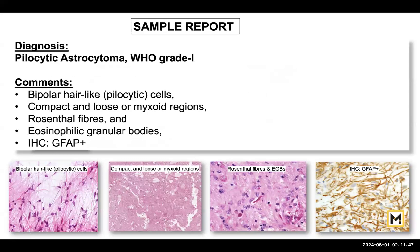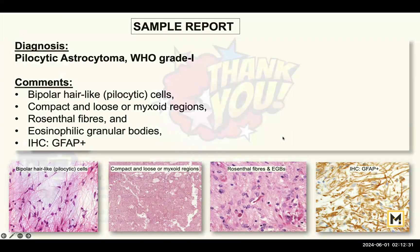This is a sample report showing how we report such cases. You can diagnose it as pilocytic astrocytoma WHO grade 1 with comments highlighting the diagnostic hallmarks: bipolar hair-like pilocytic cells, compact or loose myxoid areas, Rosenthal fibers, and eosinophilic granular bodies, with GFAP positivity on IHC. We always include such images so that it becomes easier for the clinician or surgeon to understand. Thanks for watching.